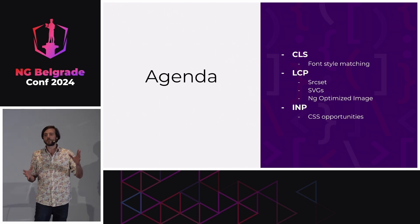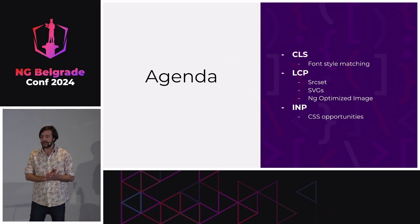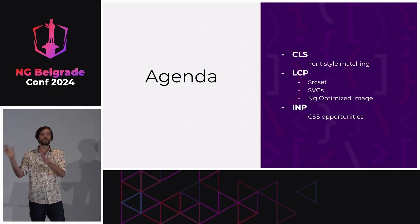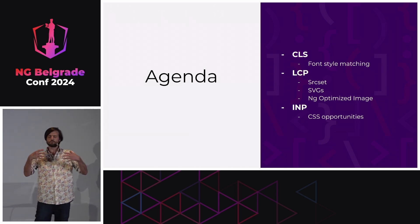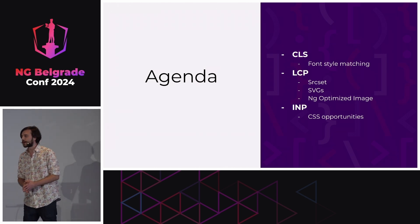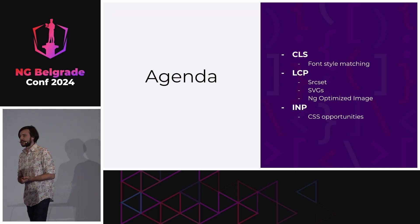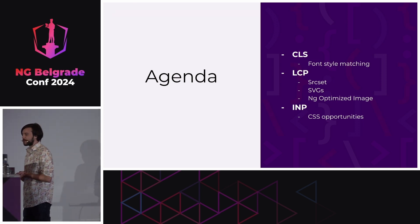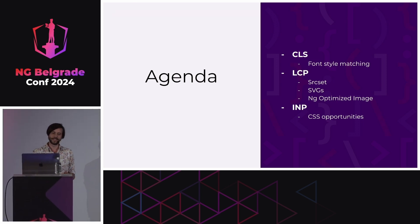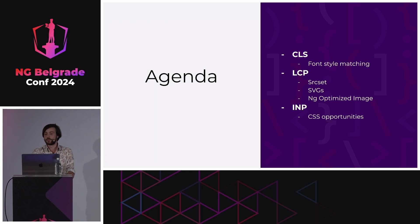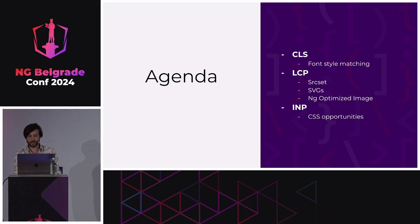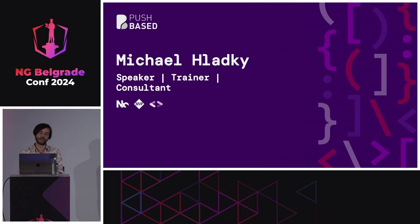We need to care about web performance, especially in 2024 when we have some cool new things in metrics. The whole talk is arranged around the Core Web Vitals and their non-trivial parts. I'll give you an introduction to what they are, but then focus very quickly on stuff that is not easy, that you most probably need to know — independent of framework, and some things are obviously Angular-related.